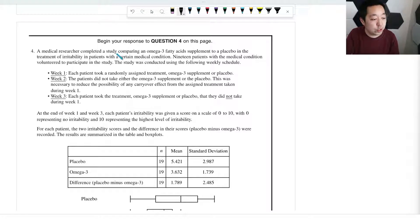So we have a medical researcher who completed a study comparing omega-3 fatty acid supplement to a placebo in the treatment of irritability in patients with certain medical conditions. Nineteen patients volunteered to participate. Each patient took a randomly assigned treatment, omega-3 or placebo. Then they swapped it for the second week.